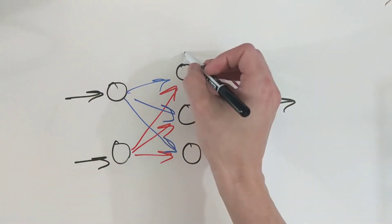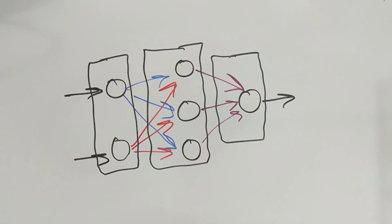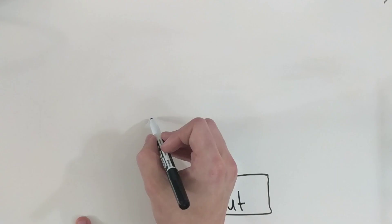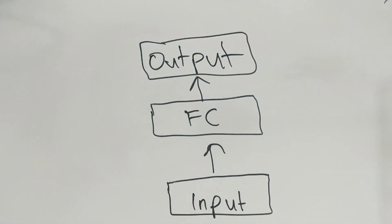These layers of neurons that connect to every input are called fully connected layers, or FC, and if you combine all of these layers together, you get an artificial neural network.